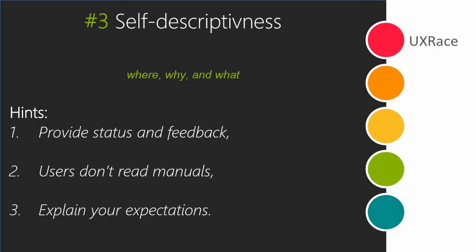This thought leads us to the third dialogue principle: self-descriptiveness. It should be obvious for the user where they are, why they are there, and what they should do next. For instance, the dialogue should provide guidance, status, and feedback. The need to consult the manual should be minimized, and the user should be informed about the expected input and the input format.